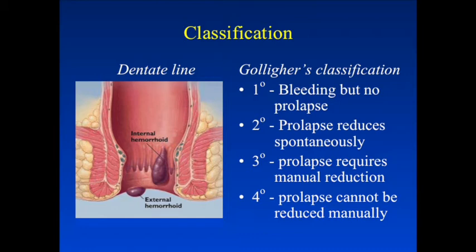Another classification divides hemorrhoid presentation into four categories. First degree hemorrhoids cause only bleeding. Second degree hemorrhoids cause some prolapse that spontaneously reduces. Third degree hemorrhoids have to be reduced manually. And fourth degree hemorrhoids are hemorrhoids that cannot be reduced manually.